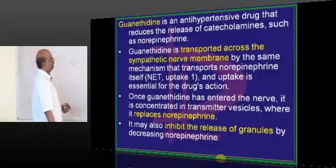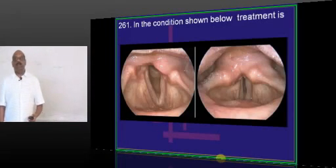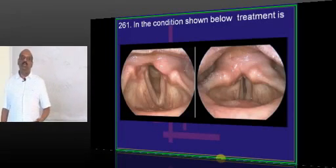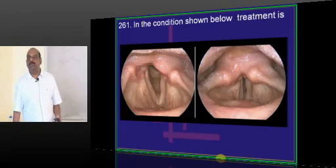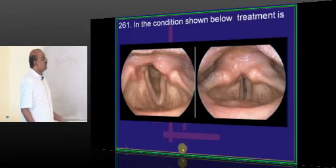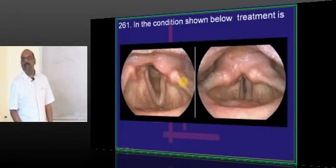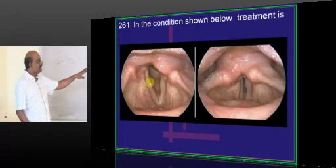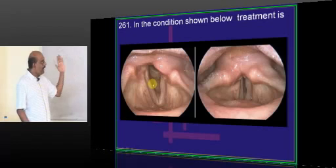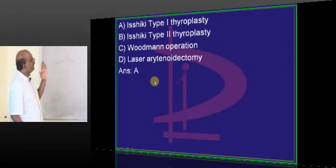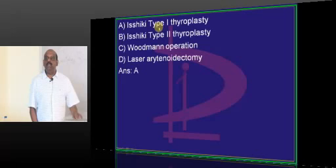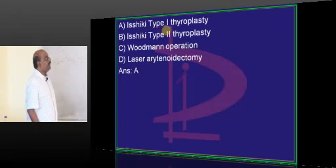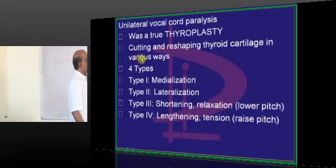In the condition shown below, what is the type of surgery that you want to basically do? There is a unilateral vocal cord paralysis. You can see the two vocal cords—unilateral vocal cord paralysis. In unilateral vocal cord paralysis, we do Ishiki type 1 thyroplasty.